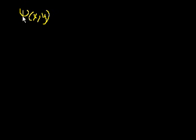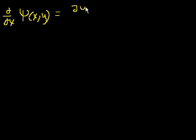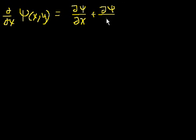In the last video, I introduced you to the idea of the chain rule with partial derivatives. We said if I have a function xi — Greek letter xi — it's a function of x and y. And if I wanted to take the derivative, not the partial, the derivative of this with respect to x, this is equal to the partial of xi with respect to x plus the partial of xi with respect to y times dy/dx.